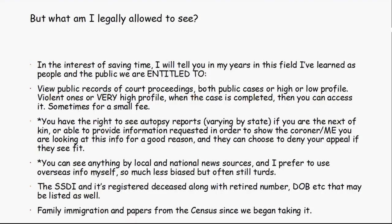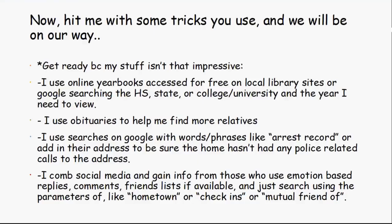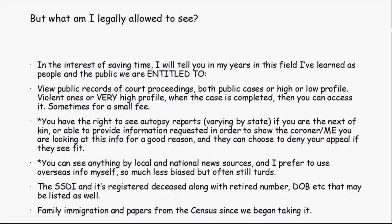Here's something that will blow your mind: the Social Security Death Index. You can access the Social Security database for deceased individuals and find things like their Social Security number while alive, their date of birth, and a lot of personal information. It's public information — as long as you don't steal the numbers. Family immigration papers and census records since the census began are also available online.